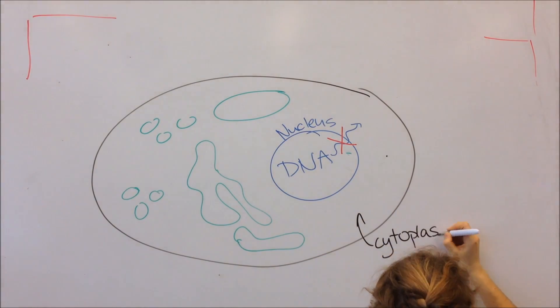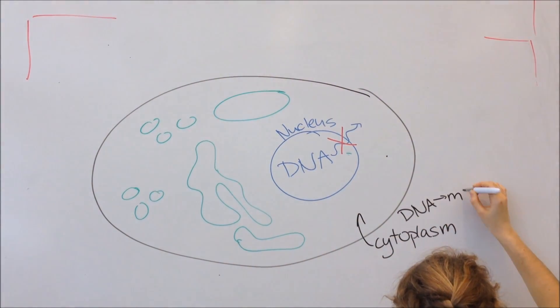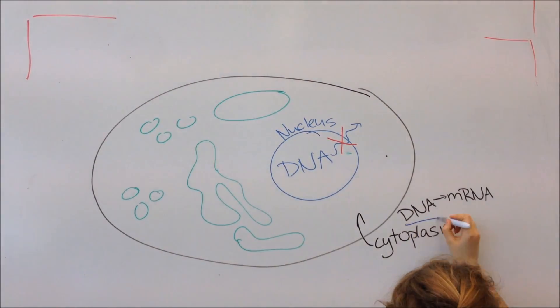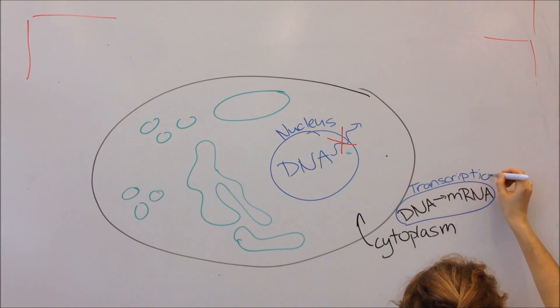Transcription takes place in the cytoplasm for a prokaryotic cell, or in the nucleus for a eukaryotic cell. The transcription is performed by an enzyme called RNA polymerase.